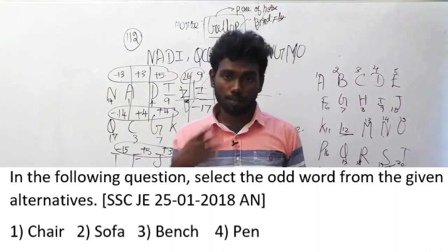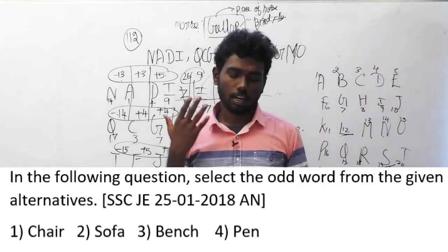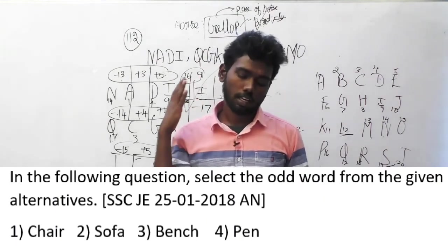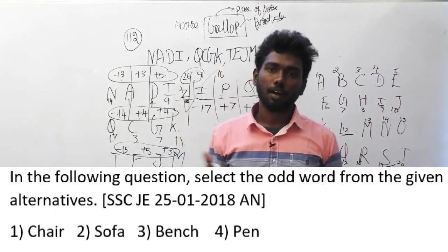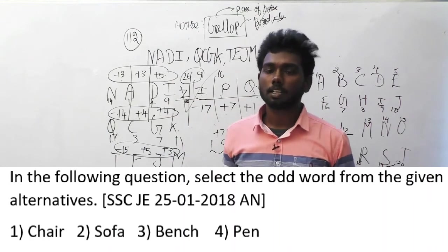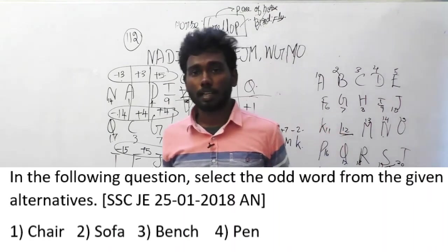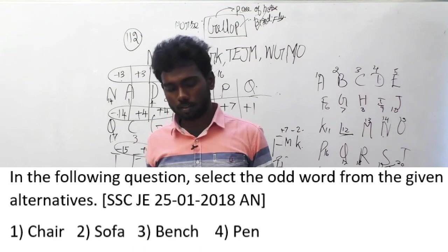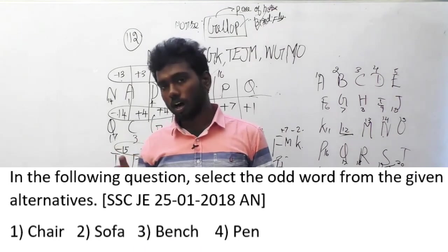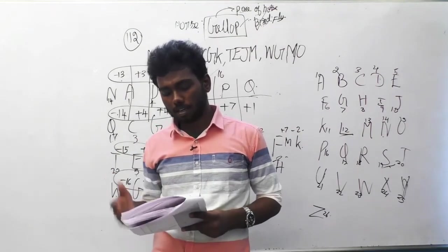It is a very easy question. Every furniture material is given along with pen. So which is the answer? Obviously pen is the answer — the other things are furniture and pen is the odd one out.